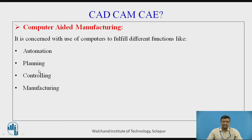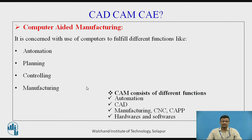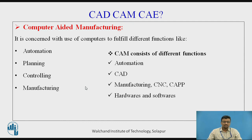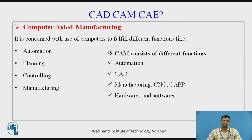Computer-aided manufacturing also includes planning — computer-aided process planning — as well as computer-aided controlling. It consists of different areas such as industrial automation. There is always the prerequisite of computer-aided design, because the design data has to be provided to computer-aided manufacturing. It involves CNC machine tools, computer-aided process planning, and the use of hardware and software.